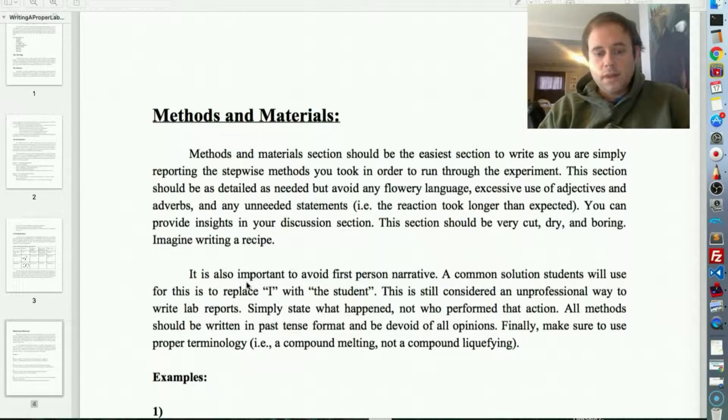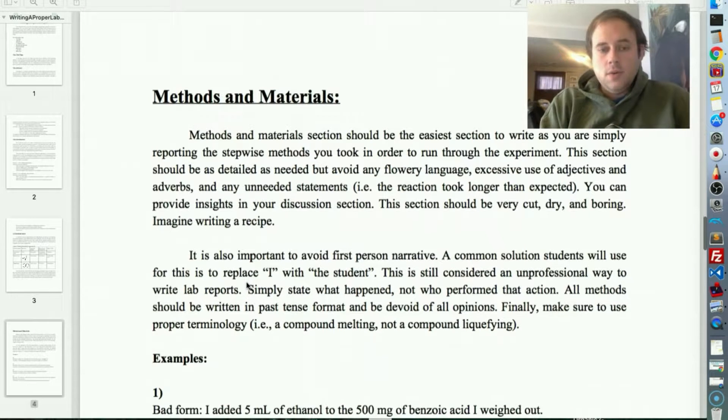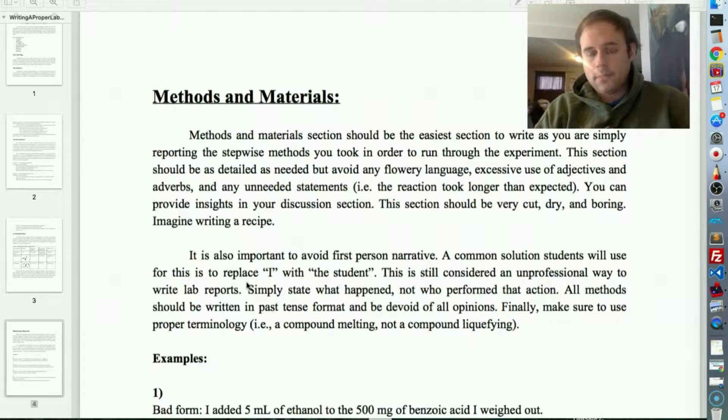If you think about a recipe, it says two cups of flour added to one cup of sugar or something like that. It's very cut, dry, and to the point. So, it's also important to avoid a couple of things here. It's very important to avoid first-person narrative. I, we, our. You also want to avoid you, things like that, like you're talking to the individual.